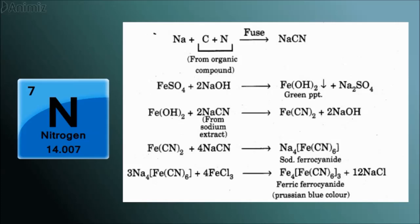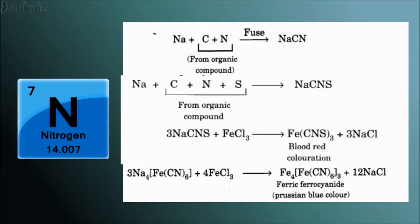which indicates presence of nitrogen in the organic compound. It is essential to add excess of sodium, because if nitrogen and sulfur both are present, then instead of sodium cyanide, they form sodium thiocyanide and it reacts with ferric chloride to form blood red coloration instead of Prussian blue color. So, better to add excess of sodium.